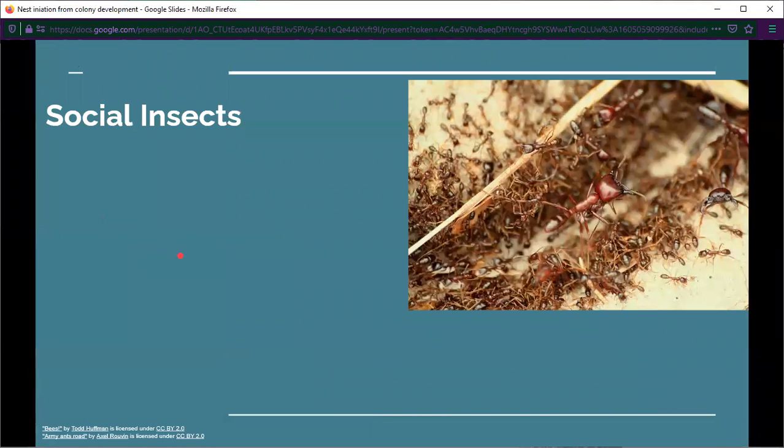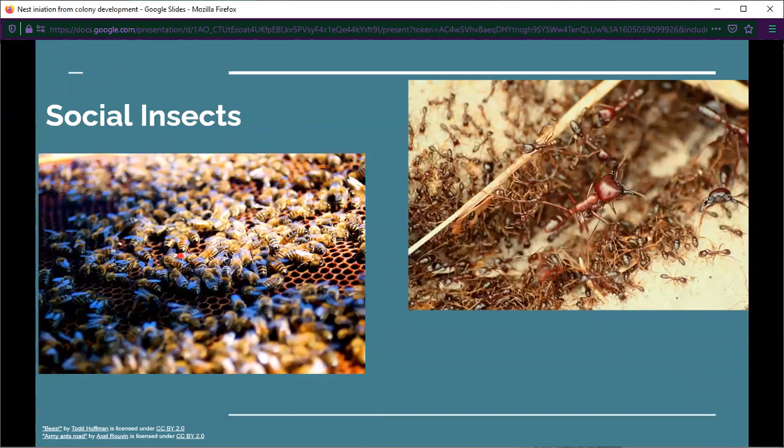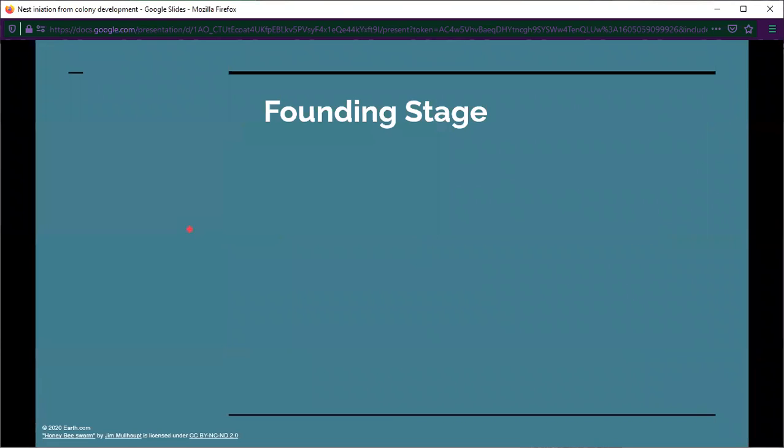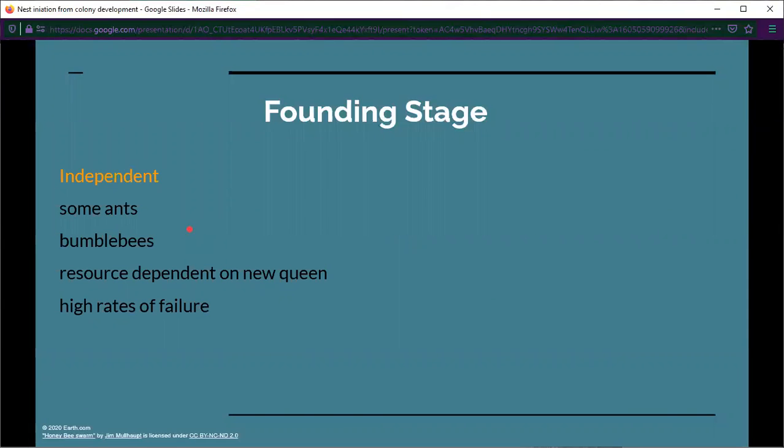Bumblebees are an example of a social insect. Social insects are cooperative organisms that include bees, ants, wasps, and termites. Once a colony is fully grown, they can have complex interactions with their environment and with each other, but in order to reach full growth, they first have to develop. Here we're going to be talking about one stage of the nest initiation process, and that is the founding stage.